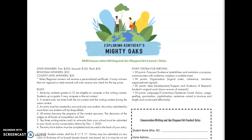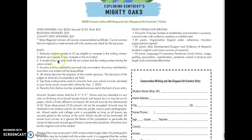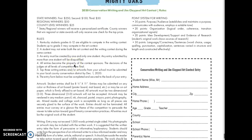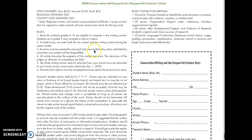Today we're going to look at page 16 of Exploring Kentucky's Mighty Oaks. This is the information about the writing piece and the contest. We're going to look briefly at the rules. Grades 6 through 12 can compete, and since you're a sixth grader you can compete. We can only compete in the writing contest. You can only have one entry, and all entries must become the property of the Conservation District.